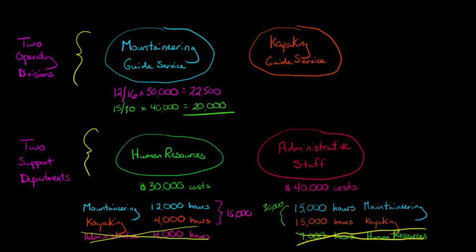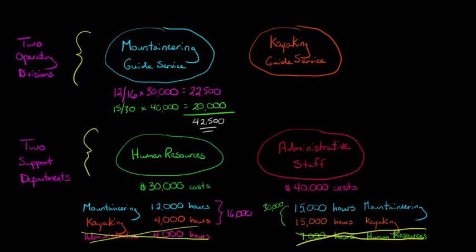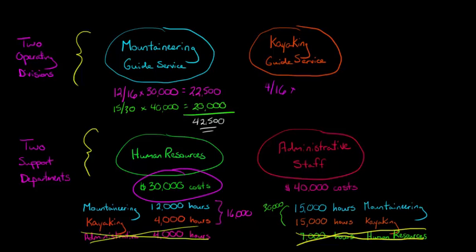Adding the HR allocation and admin staff allocation together, the total costs allocated to the mountaineering guide service division is $42,500. Now let's do the kayaking guide service. Starting with the HR department: kayaking takes up 4,000 hours out of a total of 16,000. So 4 divided by 16 times $30,000 equals $7,500. That means $7,500 of the HR costs is allocated to the kayaking division.